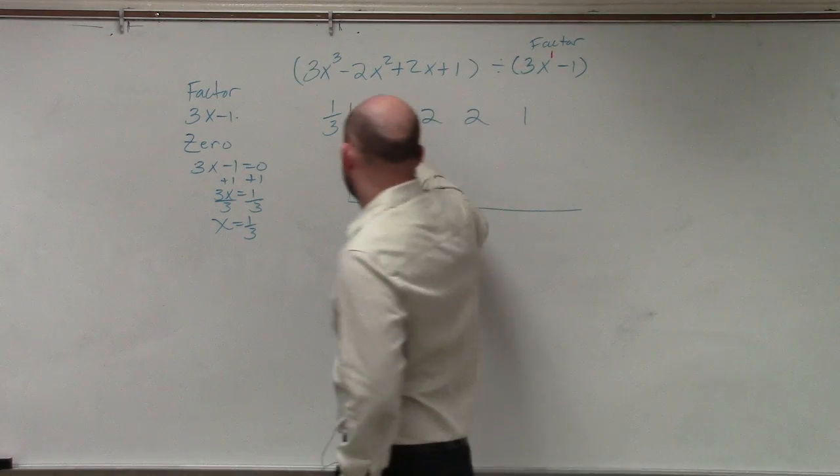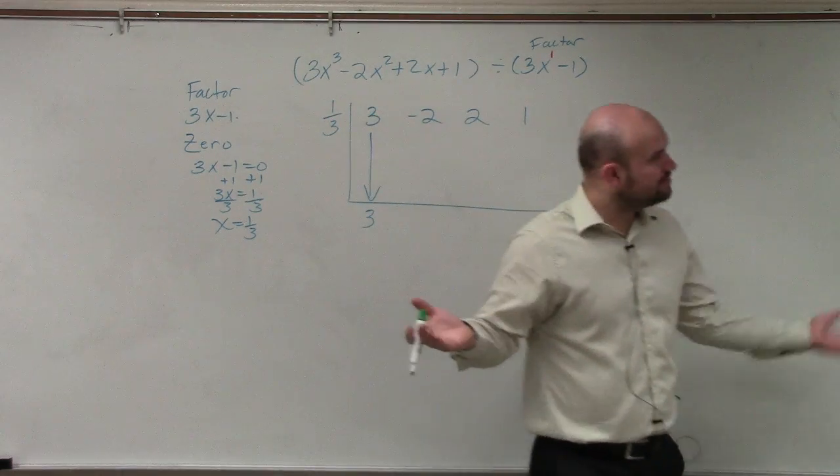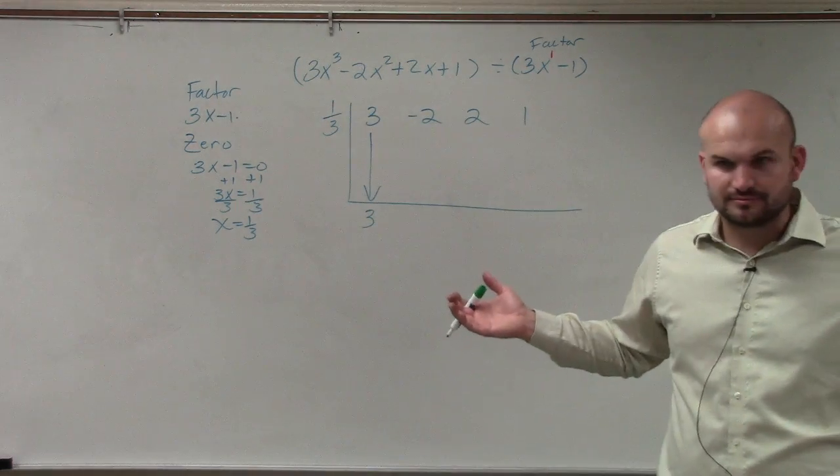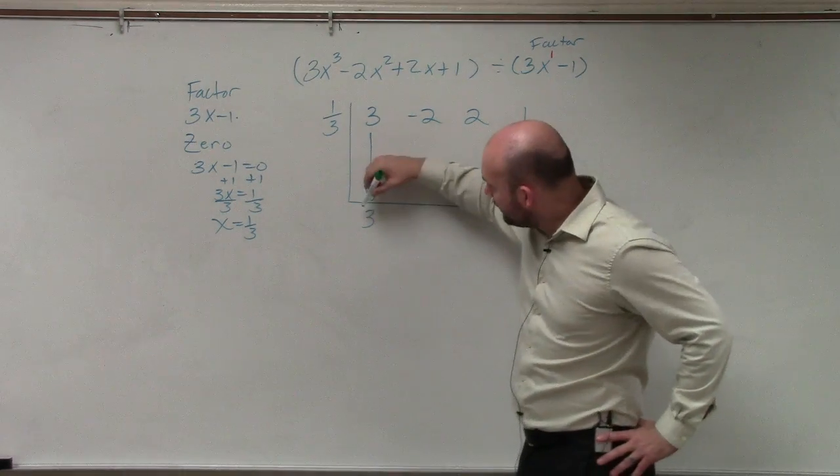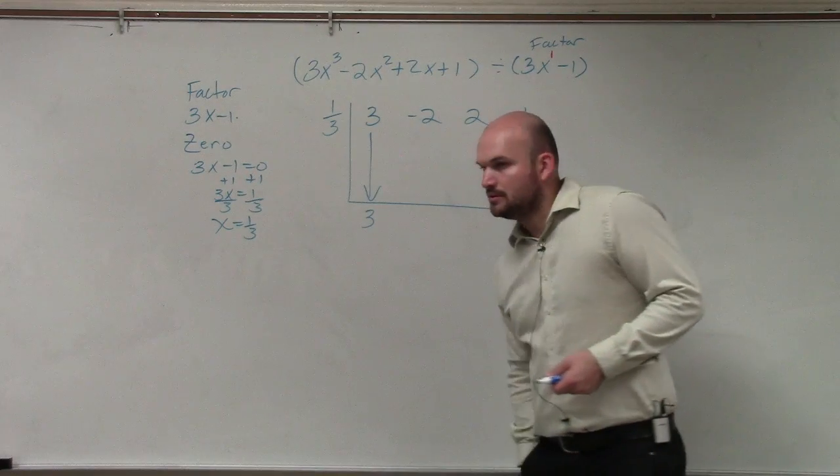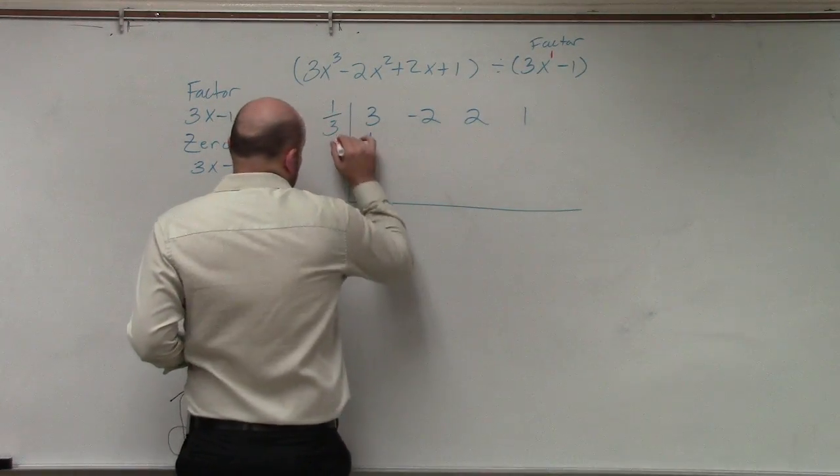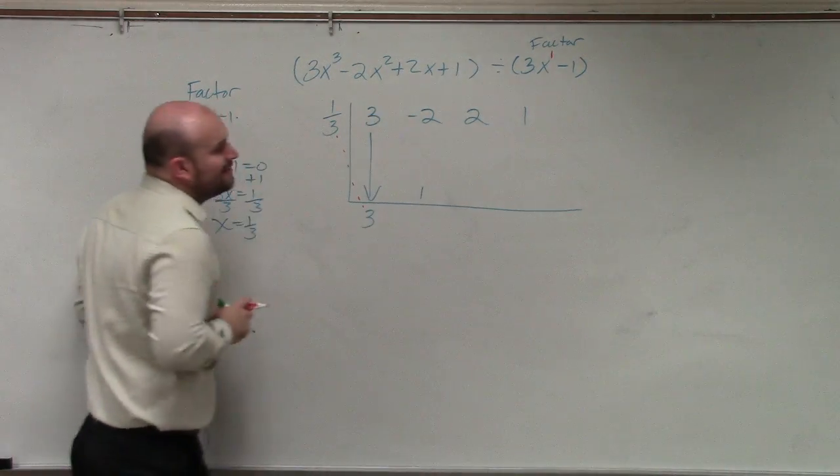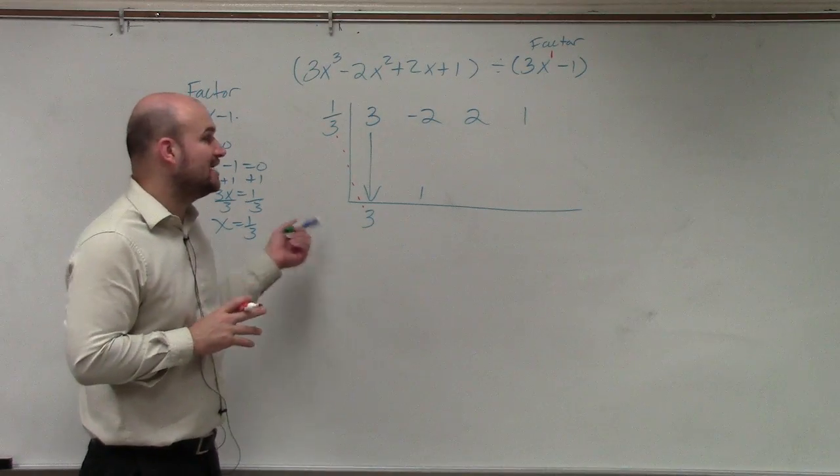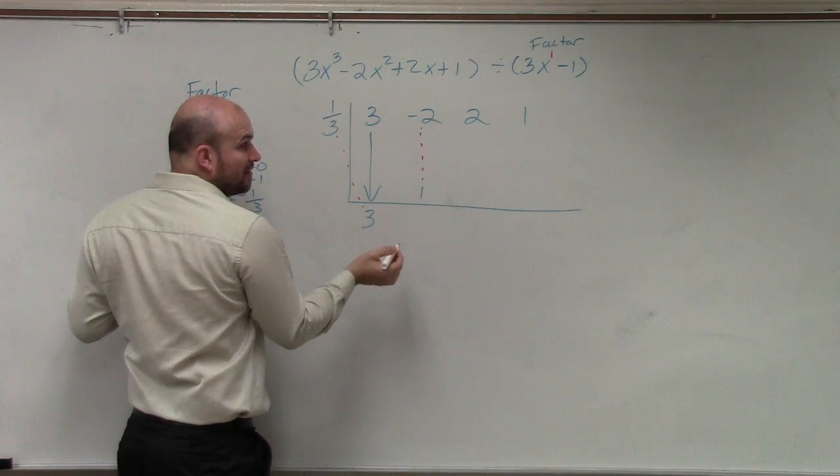First one is always the easiest. I'm surprised I'm still having people that aren't even doing the first step. Just bring it down. Then you multiply on your diagonal. 3 times 1 third is 1. Negative 2 plus 1 is negative 1, because you add on your vertical.